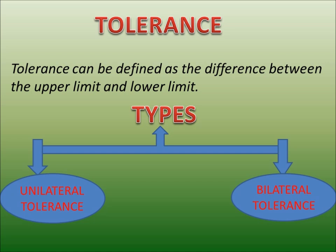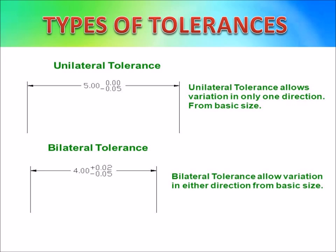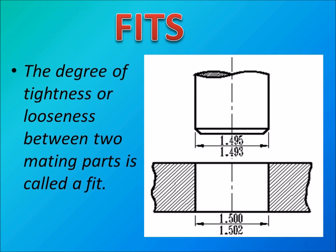Tolerance can be broadly classified into two types: unilateral and bilateral. Unilateral means the tolerance is on the same side of the basic line. Bilateral means the tolerance is provided on the opposite sides of the basic line. Holes are represented in capital letters and shafts are represented in small letters.